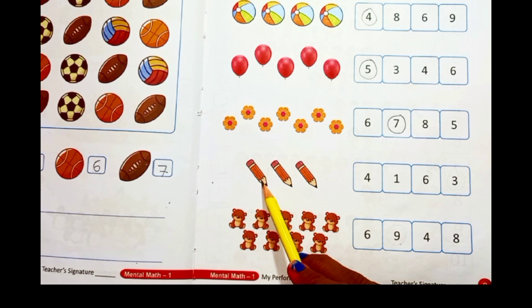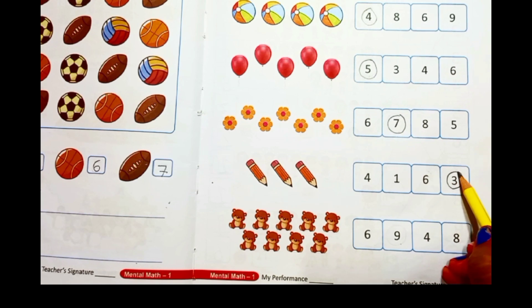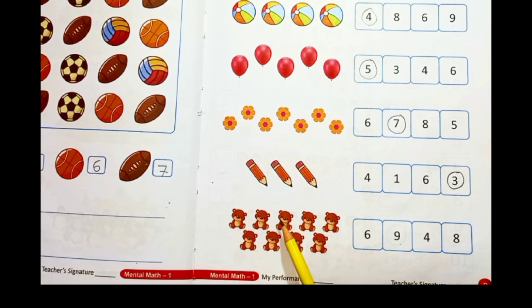Next, 1, 2, 3, 4, 5, 6, 7, 8, 9. There are 9 teddies. Where is number 9? Yay.